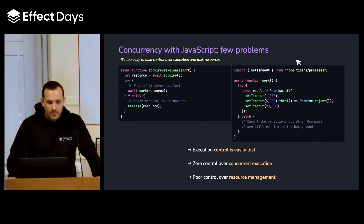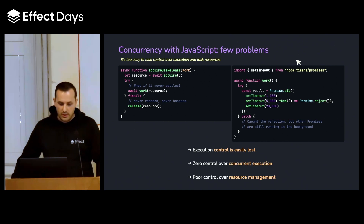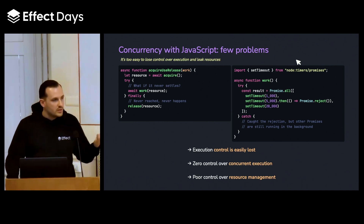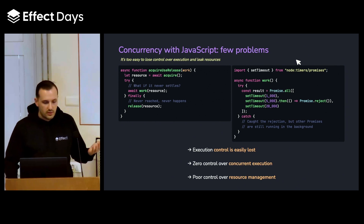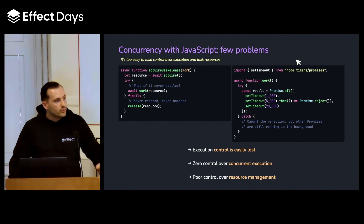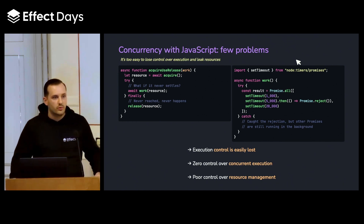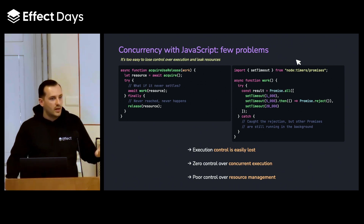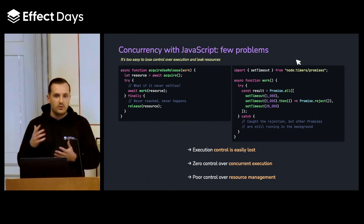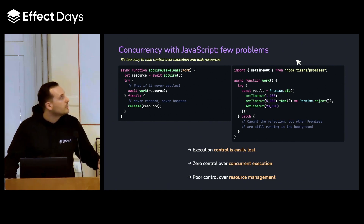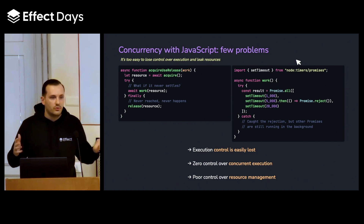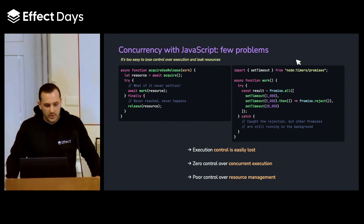Let's see a few problems we face with JavaScript, concurrency, and promises. Obviously it's not exhaustive — we have many other problems — but let's just see a few of them. The first one is that whenever you come to await a promise, you kind of lose execution control over it. If you want to exit from that situation, you don't really have any way of doing that.